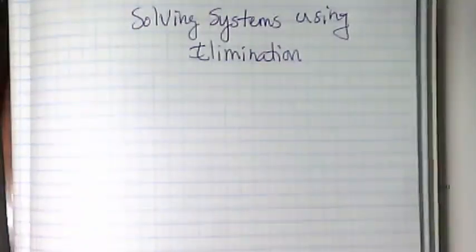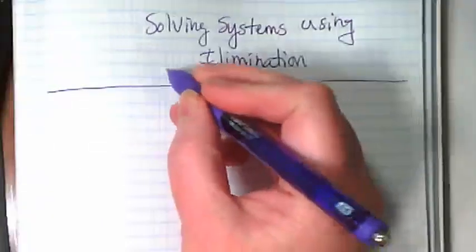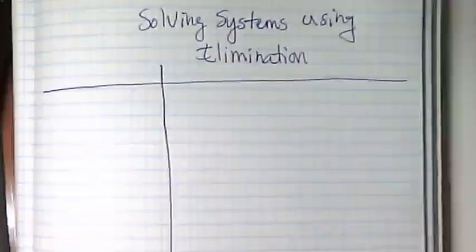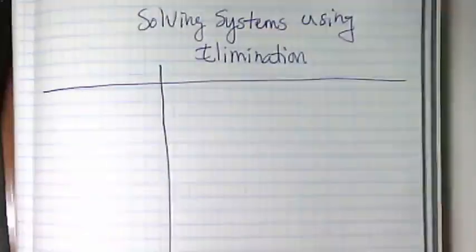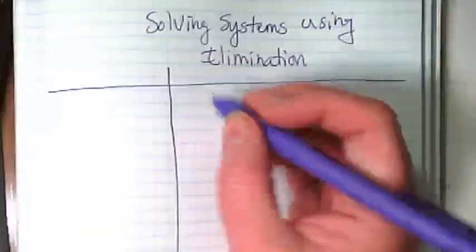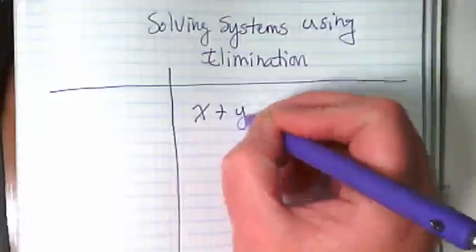So today we're going to look at elimination. I want you to set up your paper today kind of like Cornell notes. We're going to make two columns. Column on the left smaller, column on the right with room to work. And I want you to write down this system just like I have it written down.